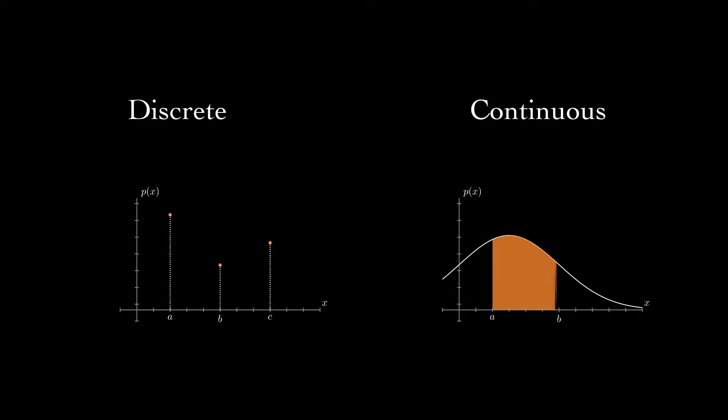So, probability theory enables us to reason about our uncertainty. Now, a key distinction that informs how we handle a particular random variable is if it's discrete or continuous.